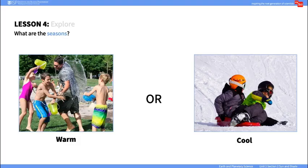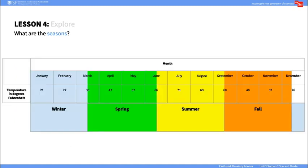In the Explore portion of the lesson, ask students if it is warm or cool outside today, and connect that observation to the current season of the year. Then, displaying this data table for students, discuss how temperature changes throughout the year, the current month, and season.